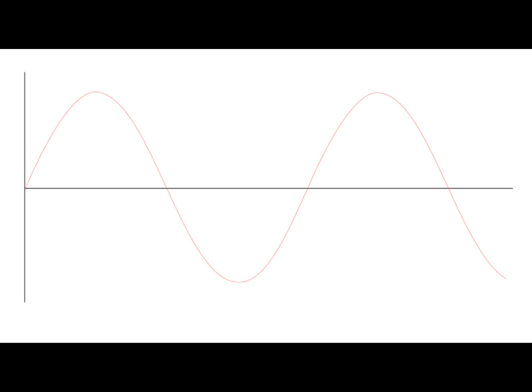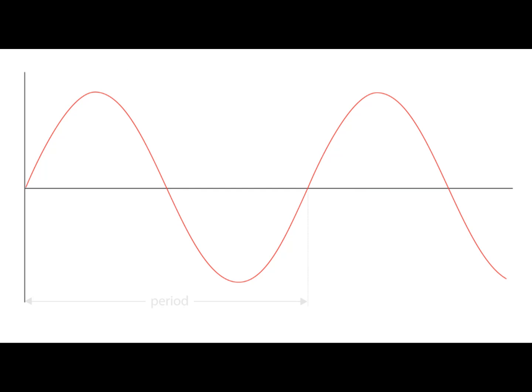To understand phasing, it's important to understand phase. If we look at a sine wave, where the wave crosses zero and starts rising is considered to be zero degrees. Following along the wave, its maximum point would be 90 degrees. A zero crossing going down would be 180 degrees. 270 is its maximum negative value, and then back up to 360, which is zero again. The time between zero and 360 degrees is the period of the wave, and is equal to one second divided by the frequency of the wave.